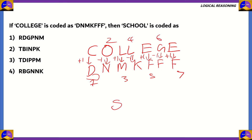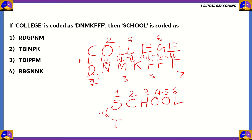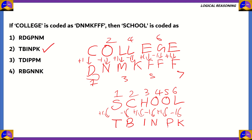Applying the same logic to SCHOOL — positions 1 through 6: S is in position 1 (odd), so we add 1 to get T. C is in position 2 (even), so we subtract 1 to get B. H is in position 3 (odd), so we add 1 to get I. O is in position 4 (even), so we subtract 1 to get N. O is in position 5 (odd), so we add 1 to get P. L is in position 6 (even), so L minus 1 is K. So we get T, B, I, N, P, K. The correct answer is option 2.